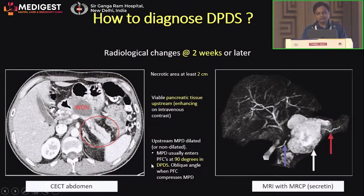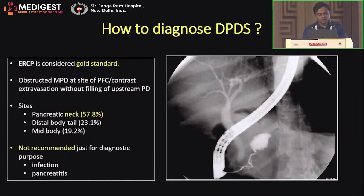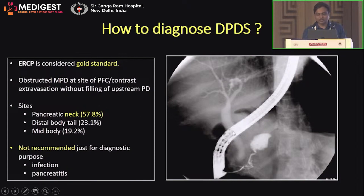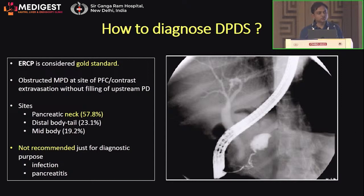In a disconnected pancreatic duct, the main pancreatic duct usually enters the pancreatic fluid collection at 90 degrees, whereas in non-disrupted duct, where a collection is merely compressing, the MPD would be at an oblique angle. ERCP is considered the gold standard and reveals either an obstructed MPD at the site of the collection or contrast extravasation without upstream ductal filling. The most common site of disruption is the pancreatic neck due to its susceptibility to ischemia. However, ERCP is not recommended for purely diagnostic purposes today, as it can introduce infection into a sterile pancreatic bed and may induce pancreatitis.